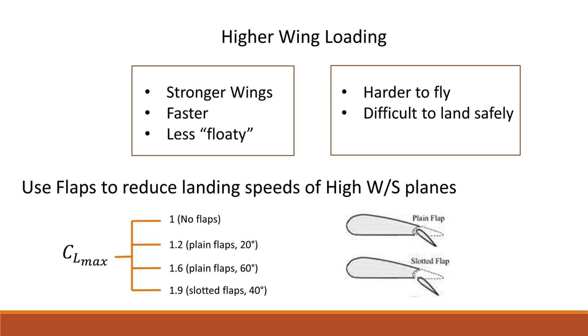One way to reduce landing speed for high wing loading planes is to use flaps. Flaps can be used to increase the CL max of your wing. Here are some typical values for CL max when using flaps.